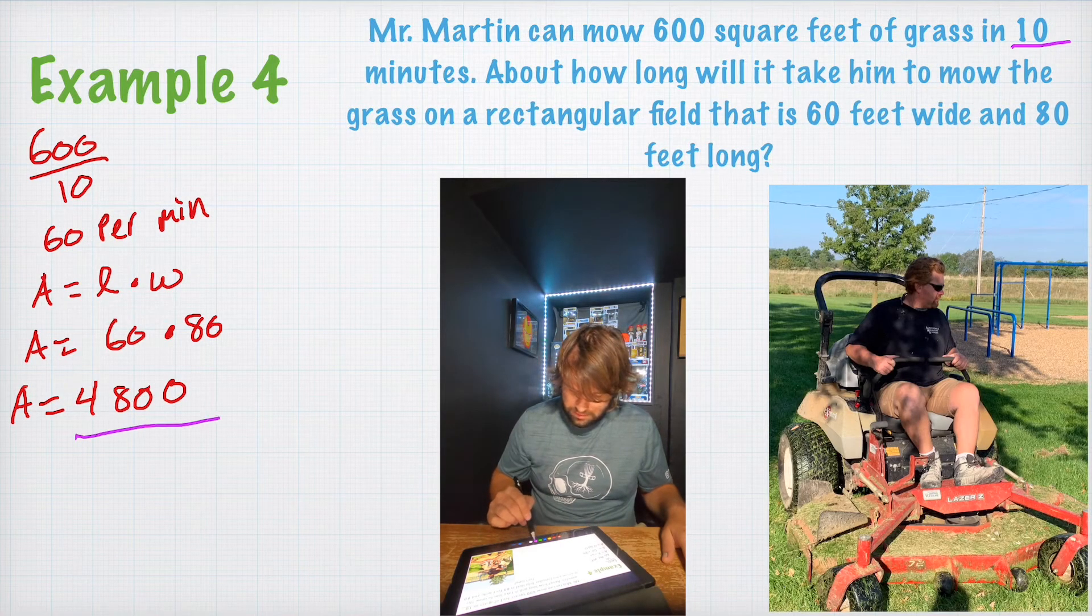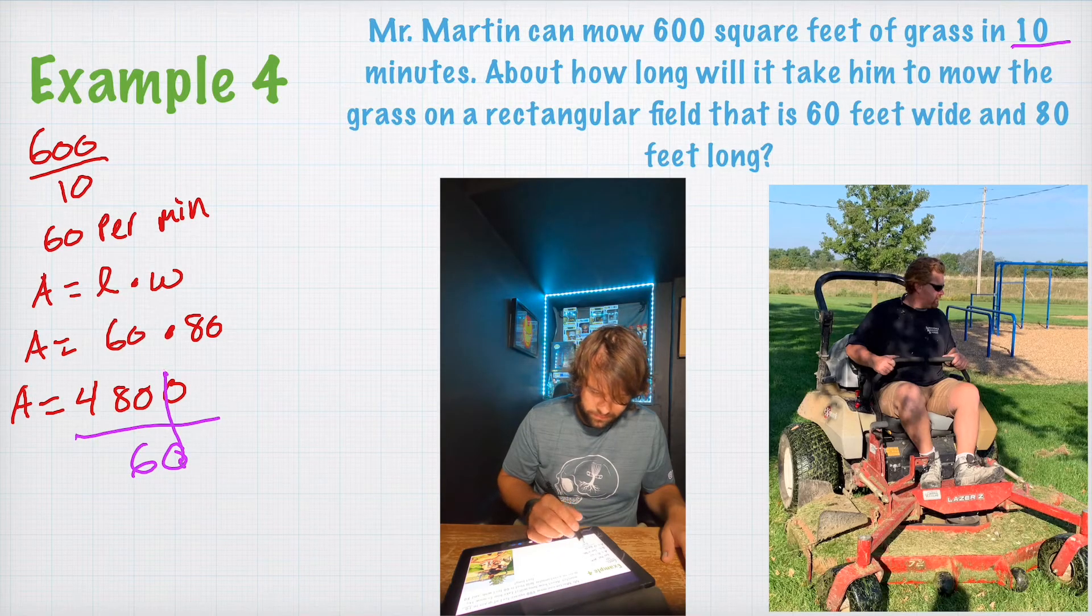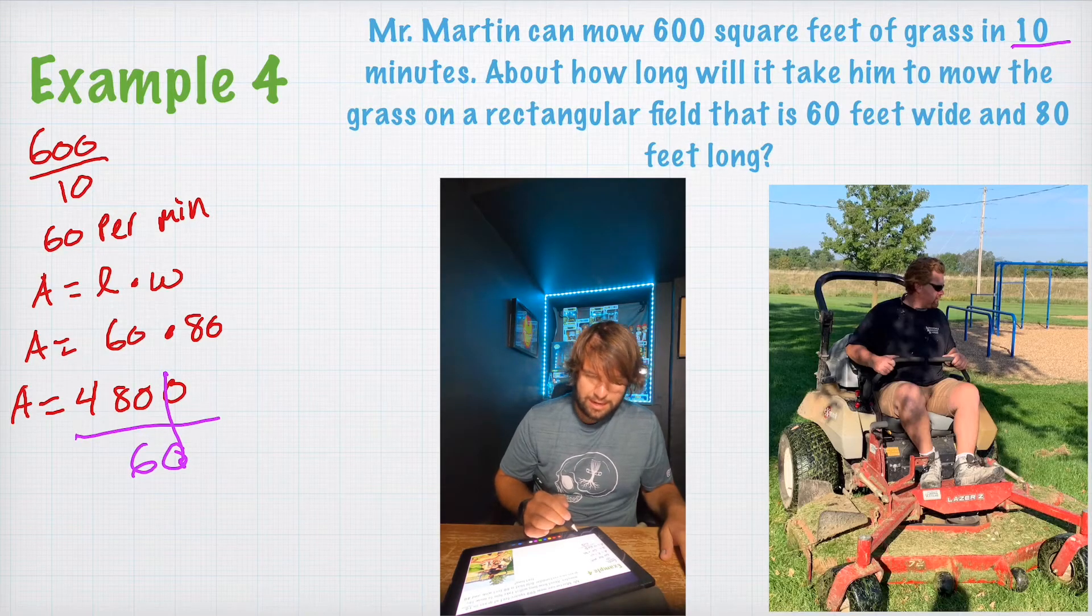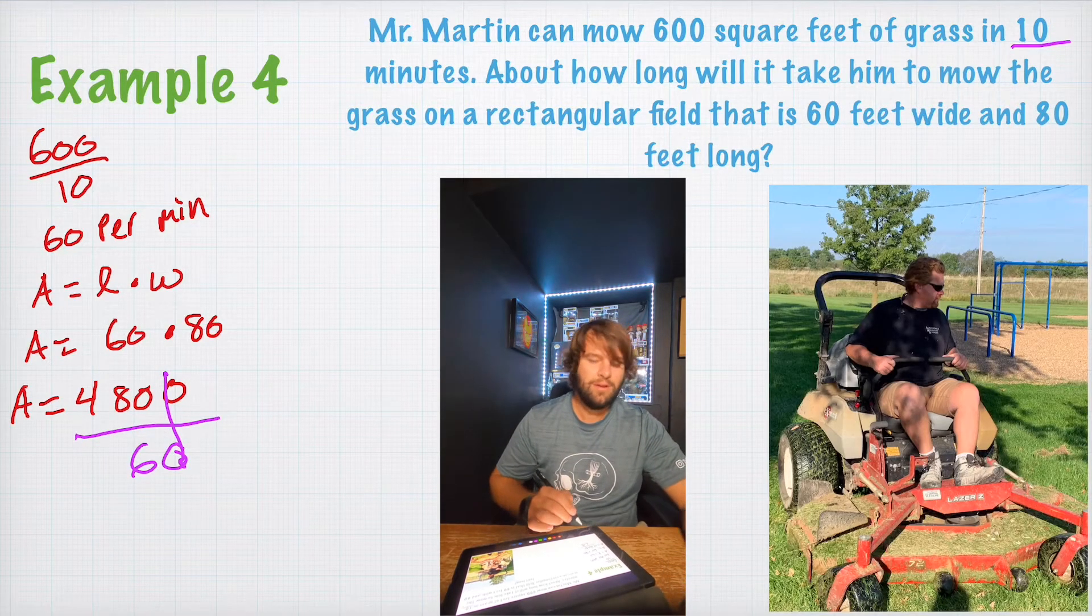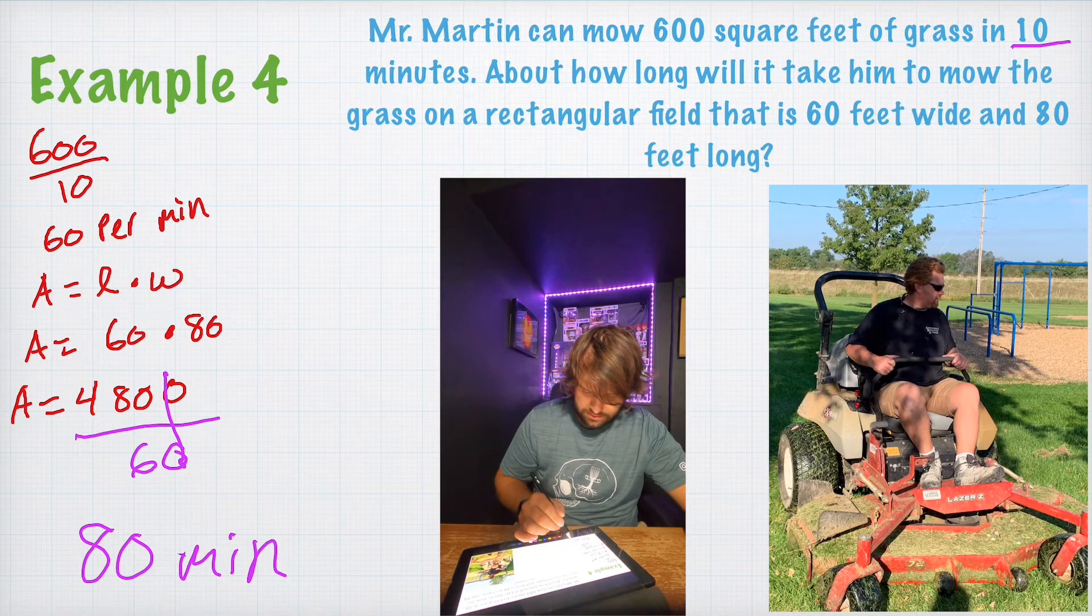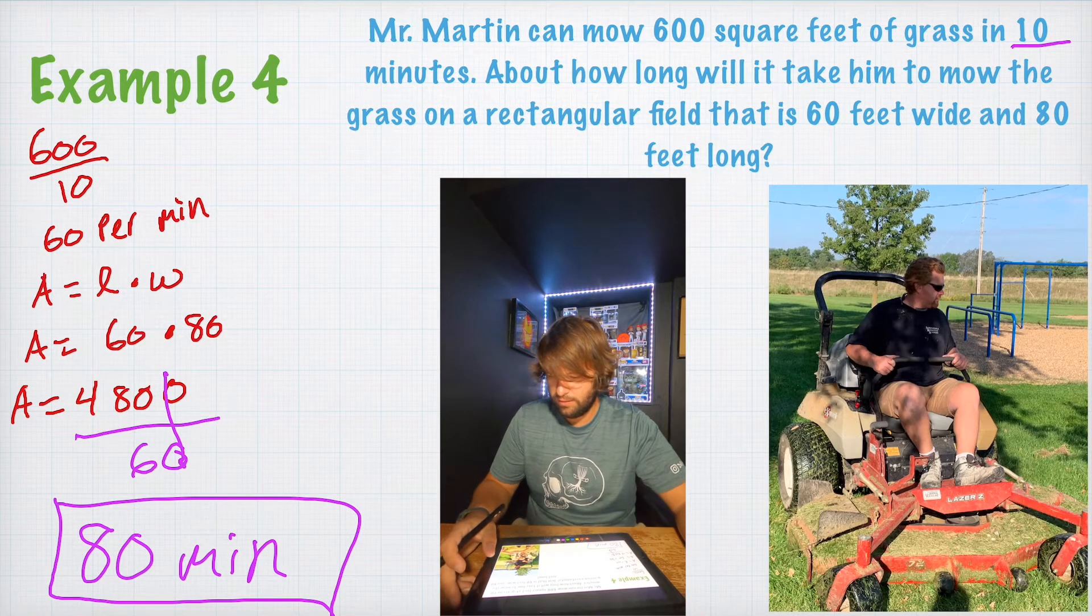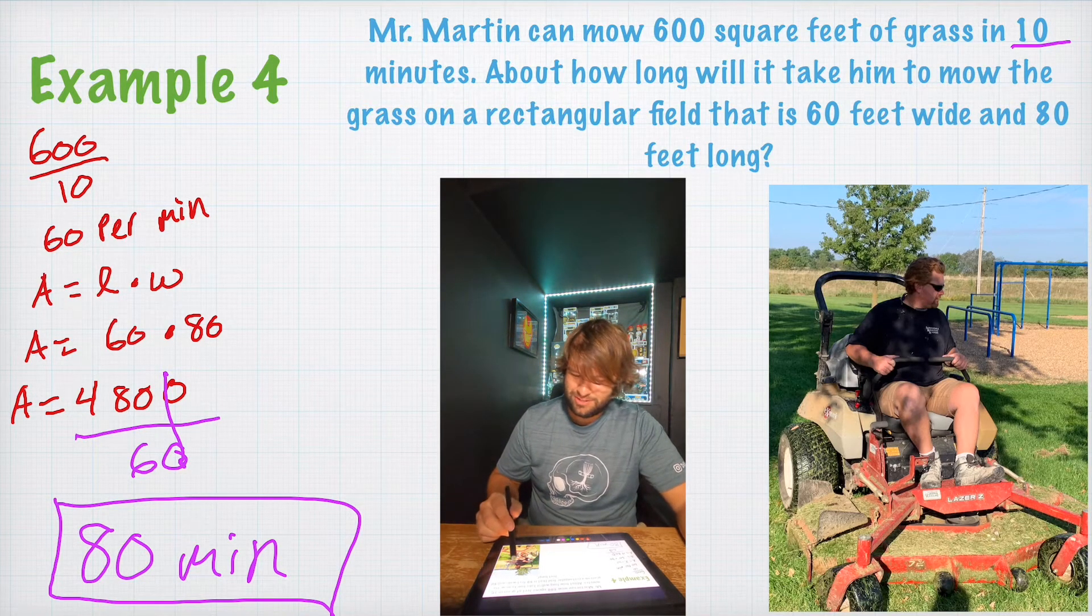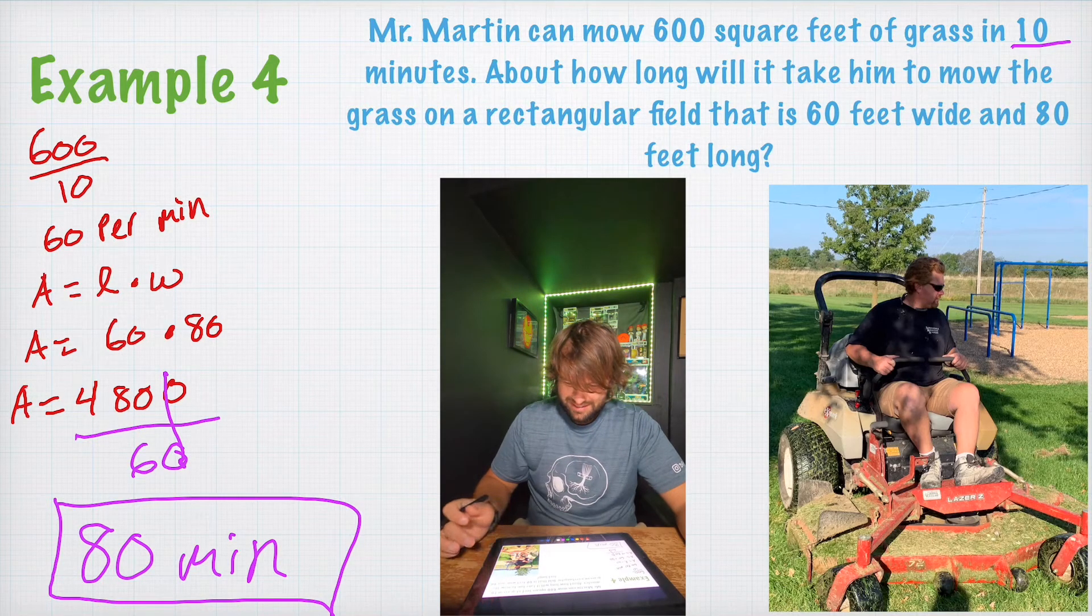Well, we're just going to divide our answer by 60. So, he can mow, the zeros are going to cancel out, 480. That's going to give us 80 minutes. It's going to take Mr. Martin 80 minutes to mow that rectangular field. Yeah. Let's keep going. Oh, shout out to last year's class for giving me the picture of Mr. Martin mowing.